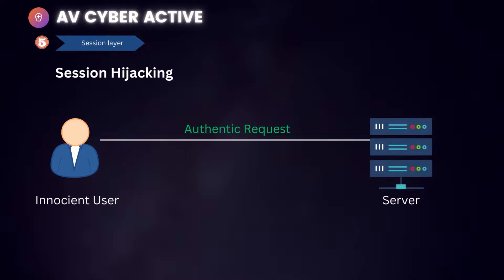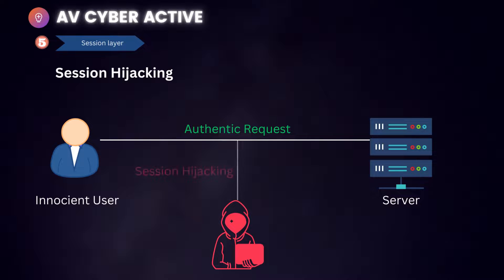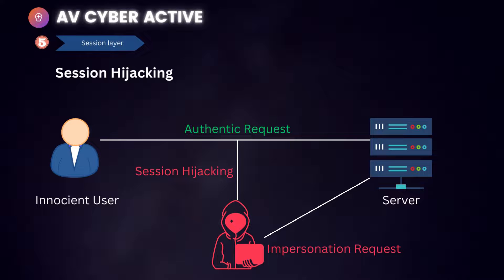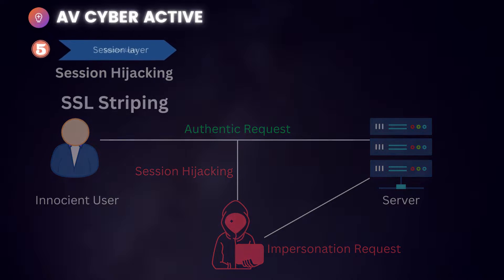It usually follows these steps: first, the victim logs on to the server and starts communication. The attacker uses a packet sniffer and reads the network traffic between the user's computer and server. The attacker then steals the session cookie and uses it to log on to the server, impersonating the victim. This means session hijacking can give hackers access to confidential information including passwords and credit card numbers, leading to identity theft or financial fraud.